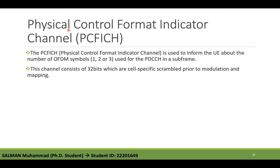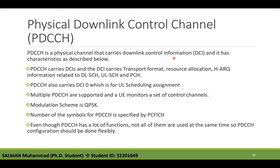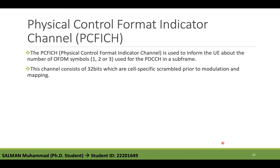The next channel is PCFICH — Physical Control Format Indicator Channel. PCFICH is used to inform the UE about the number of OFDM symbols used in the PDCCH in the subframe. This channel consists of 32 bits which are cell-specifically scrambled prior to modulation and mapping.